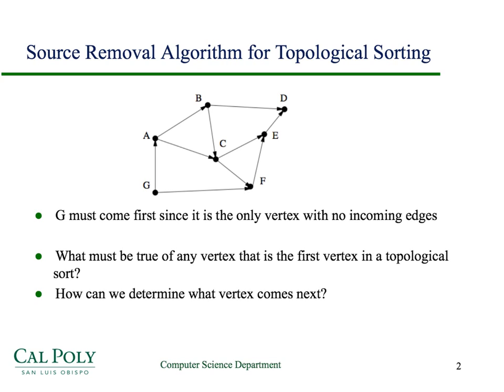What must be true of any vertex that's the first vertex in a topological sort? And, looking at the above graph, after we've determined that G must come first, how do we determine what vertex might come next in the topological sort? Is there something we can do with the graph that will enable us to determine what the next vertex is? Take a few seconds, pause the screencast, and think about the answers to those two questions.